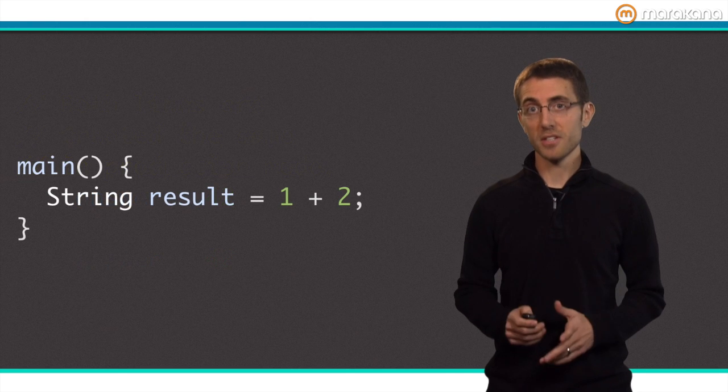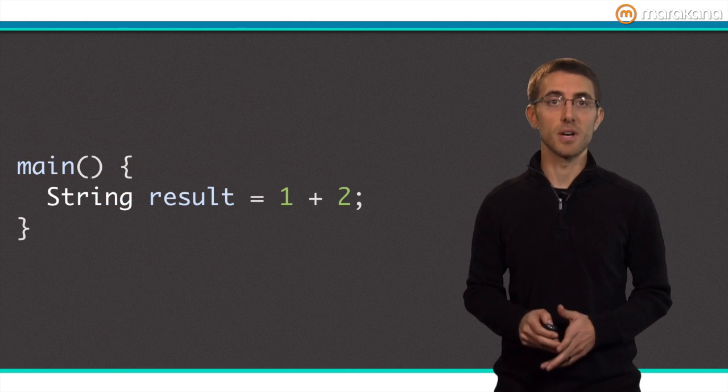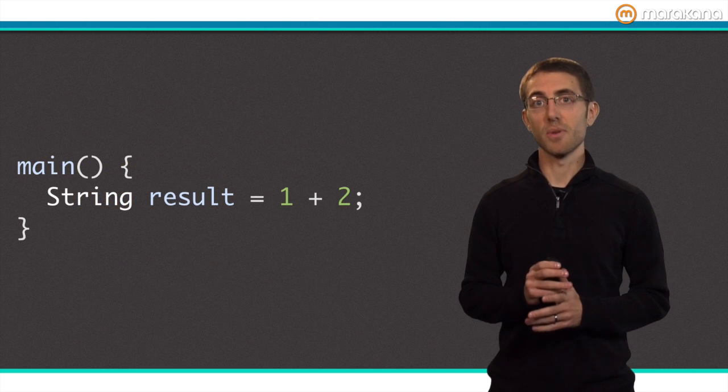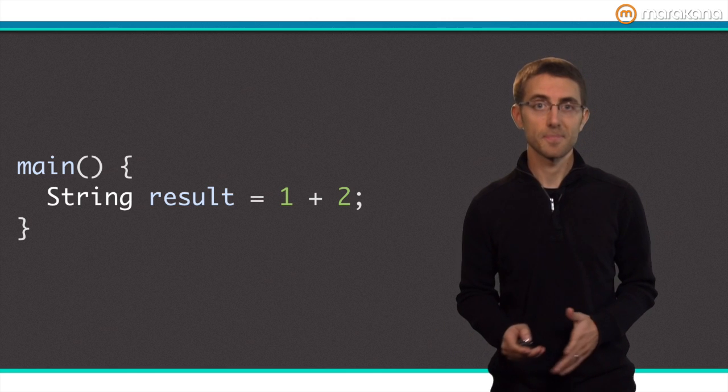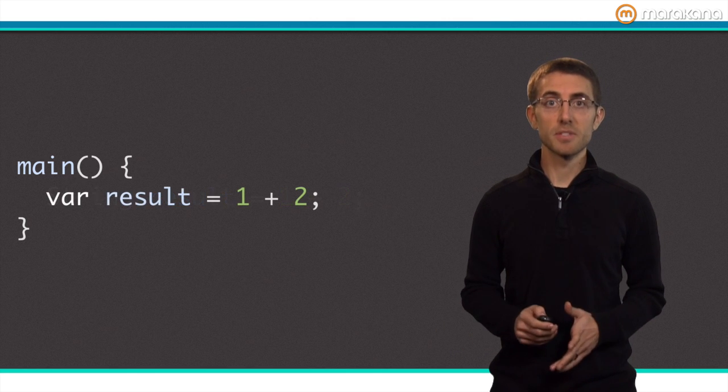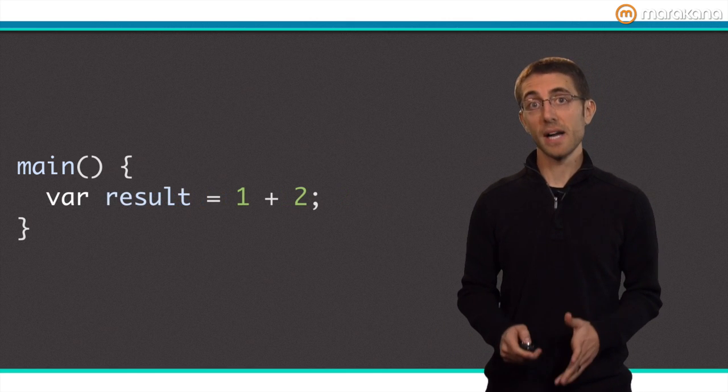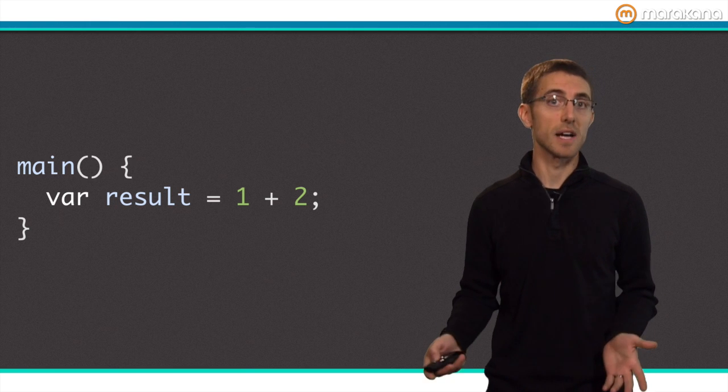This means that in production mode, this line of code compiles and runs. I know it looks strange, and I don't recommend ever writing code like this. In production mode, type annotations are ignored, and the compiler treats the code like this, which of course works just fine.